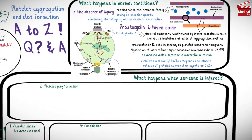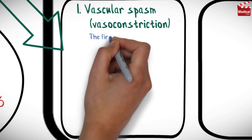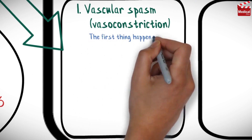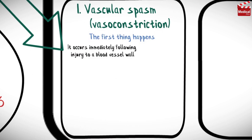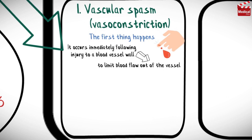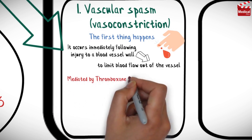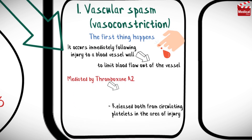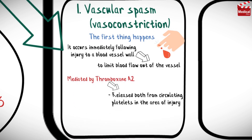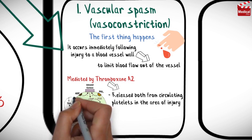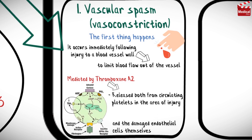When an injury occurs, the first thing that happens is vascular spasm. It occurs immediately following injury to a blood vessel wall to limit blood flow out of the vessel. This vascular spasm is believed to be mediated by thromboxane A2, which is released both from circulating platelets in the area of injury and the damaged endothelial cells themselves.